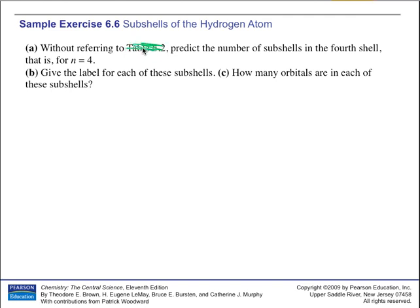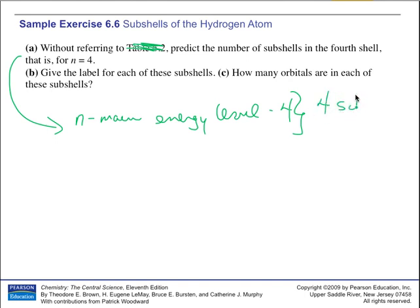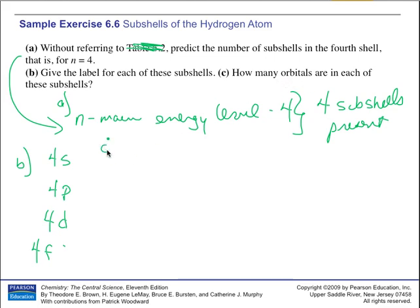Predict the number of subshells in the fourth shell, that is for n equals 4. If n is the main energy level and it's equal to 4, then there are four subshells or sub-energy levels present. The labels for each of these subshells are 4s, 4p, 4d, and 4f. How many orbitals? There's one, three, five, and seven. Hopefully you can see a pattern with that. The next screencast, we'll talk about electron configurations and how electrons fill in these main energy levels and subshells.